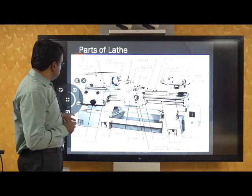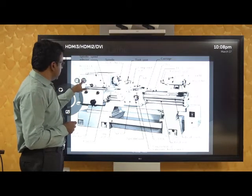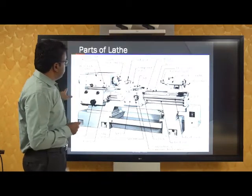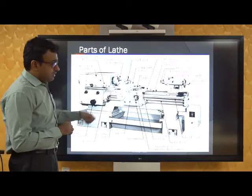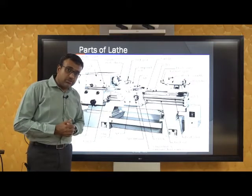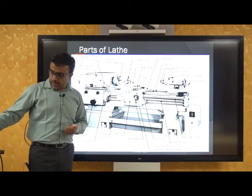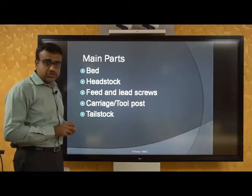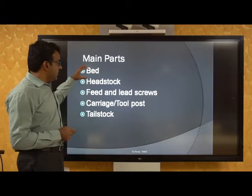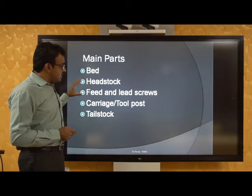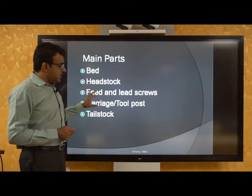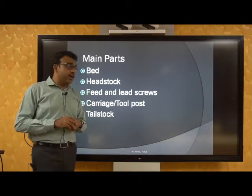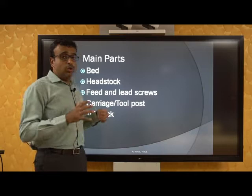This particular machine has multiple parts as you can see from this slide. As a student, we will study the major ones. There are five major parts you need to know: there is a bed, a headstock, a feed and lead screw, a carriage or tool post, and a tailstock. At least these five parts you should know in this machine.